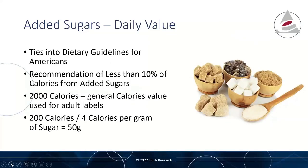The added sugars percent daily value on the label is calculated from the daily value recommendation of 50 grams. This was arrived at in line with discussions in the Dietary Guidelines for Americans, that the intake of added sugars should be less than 10 percent of overall calorie intake. Starting with the general 2,000 calories per day recommendation used for labeling, and applying 4 calories per gram of sugar as a carbohydrate, the recommendation is to limit added sugars intake to 200 calories a day — or 50 grams a day. This DV is a recommendation to keep your diet below 50 grams of sugar each day.